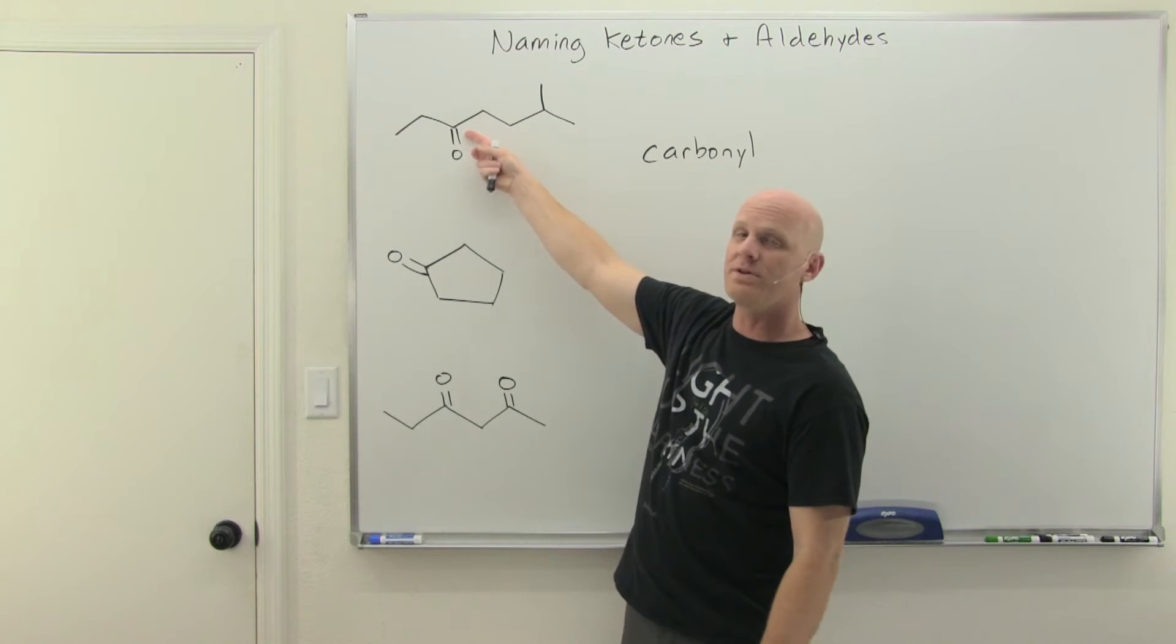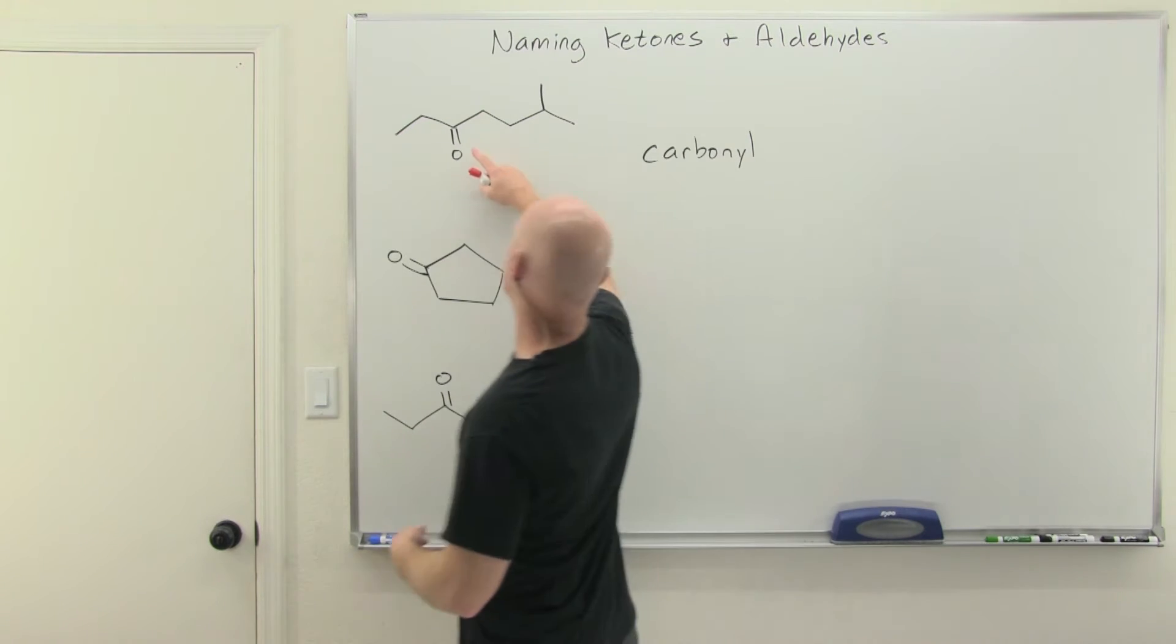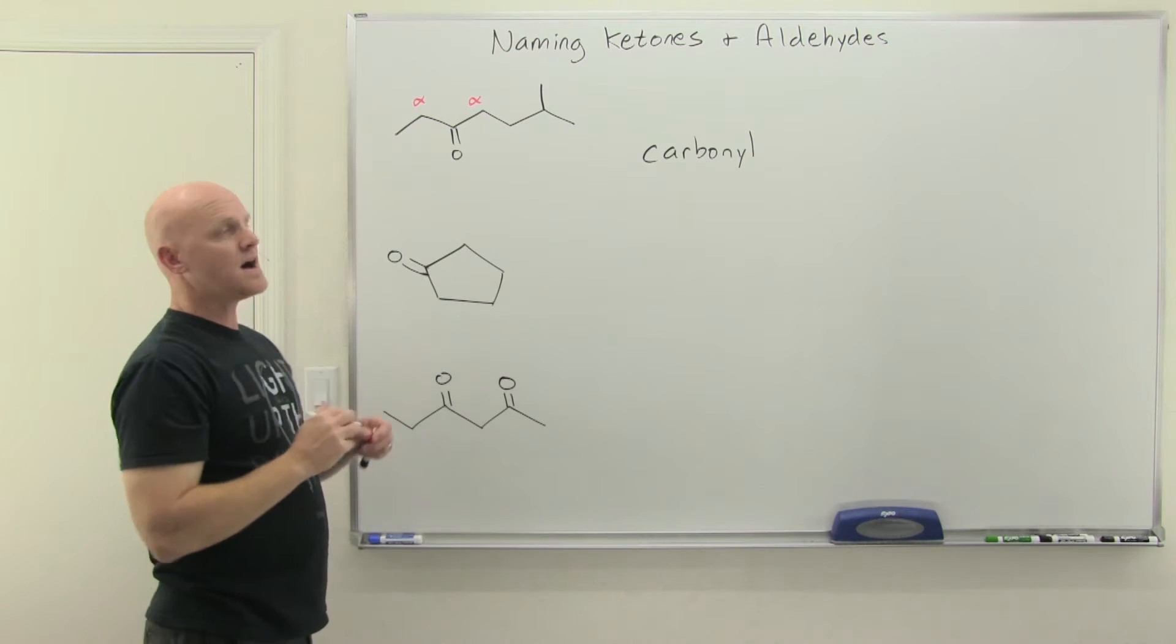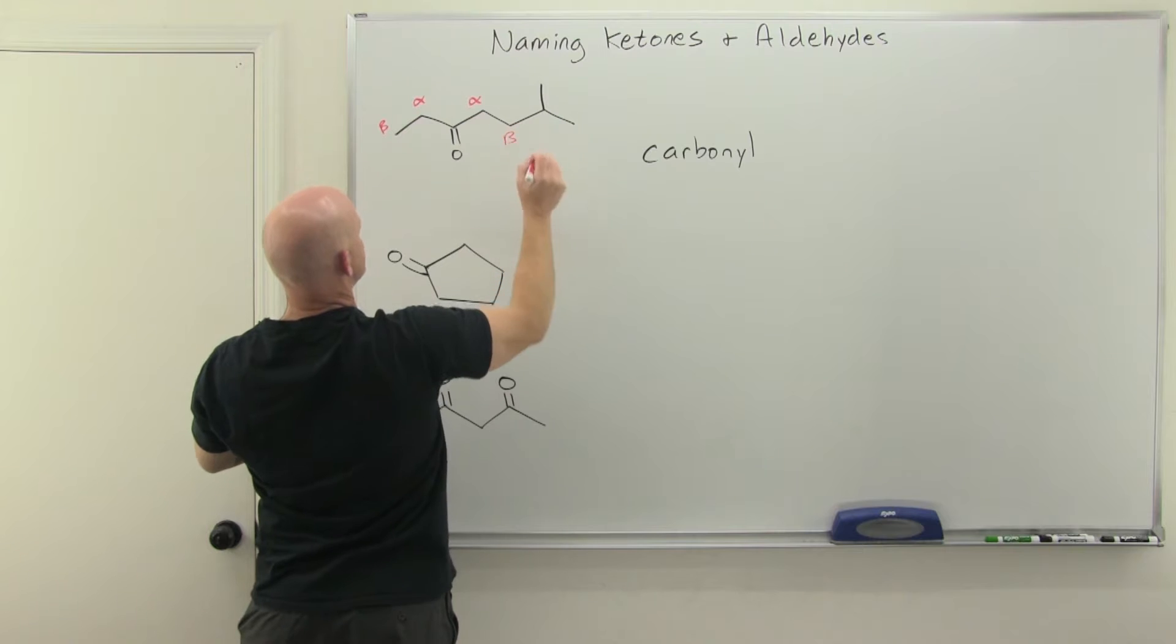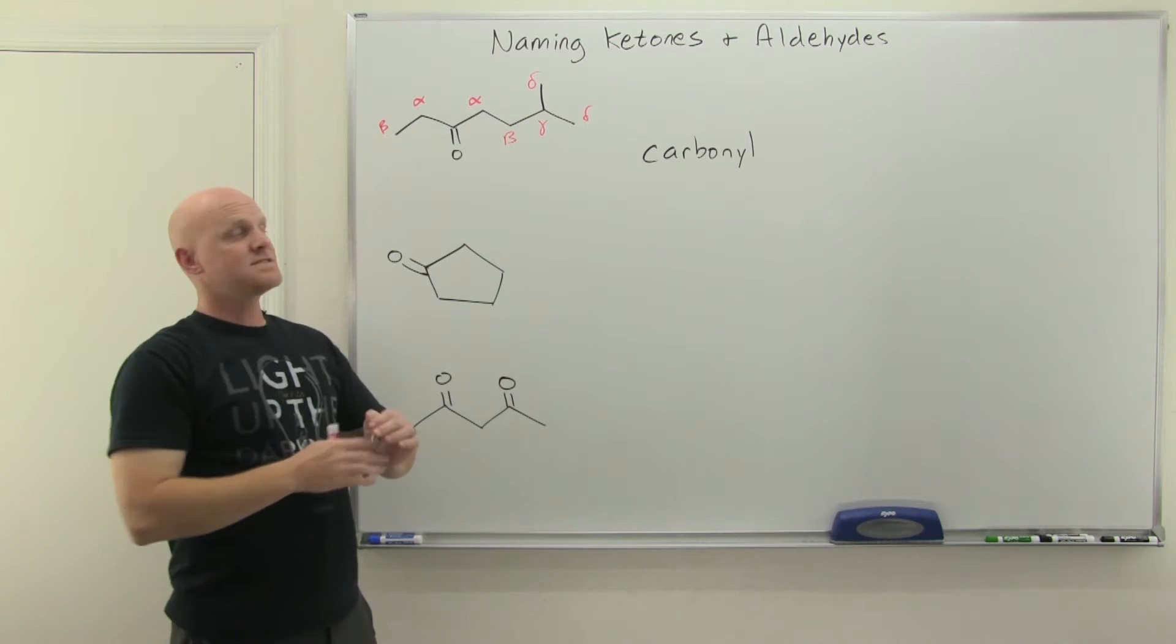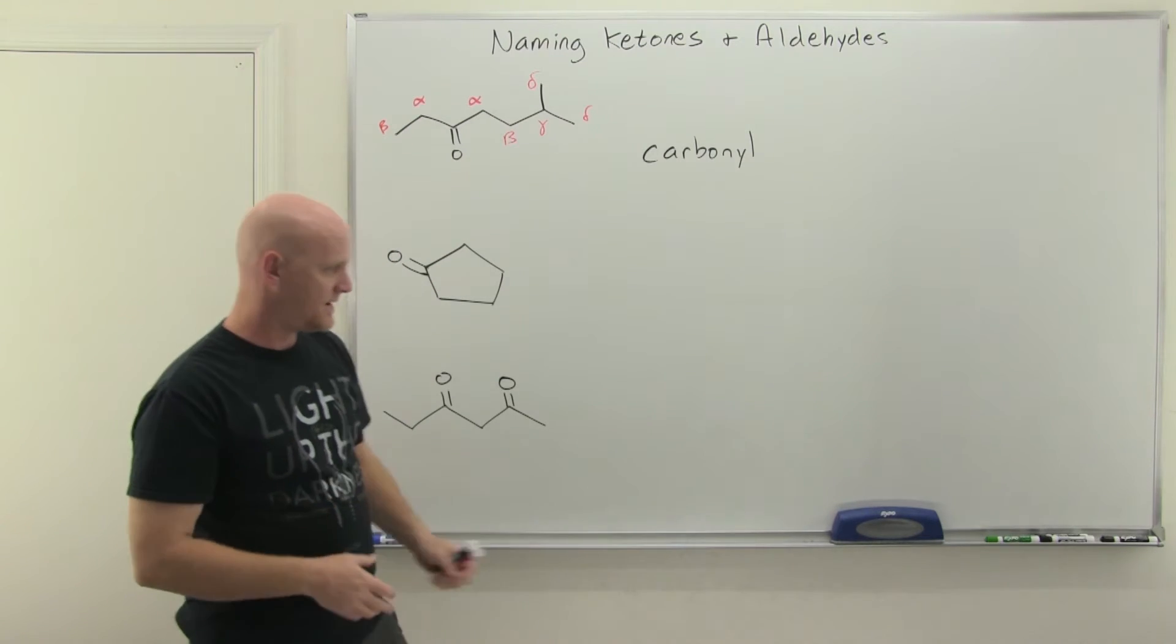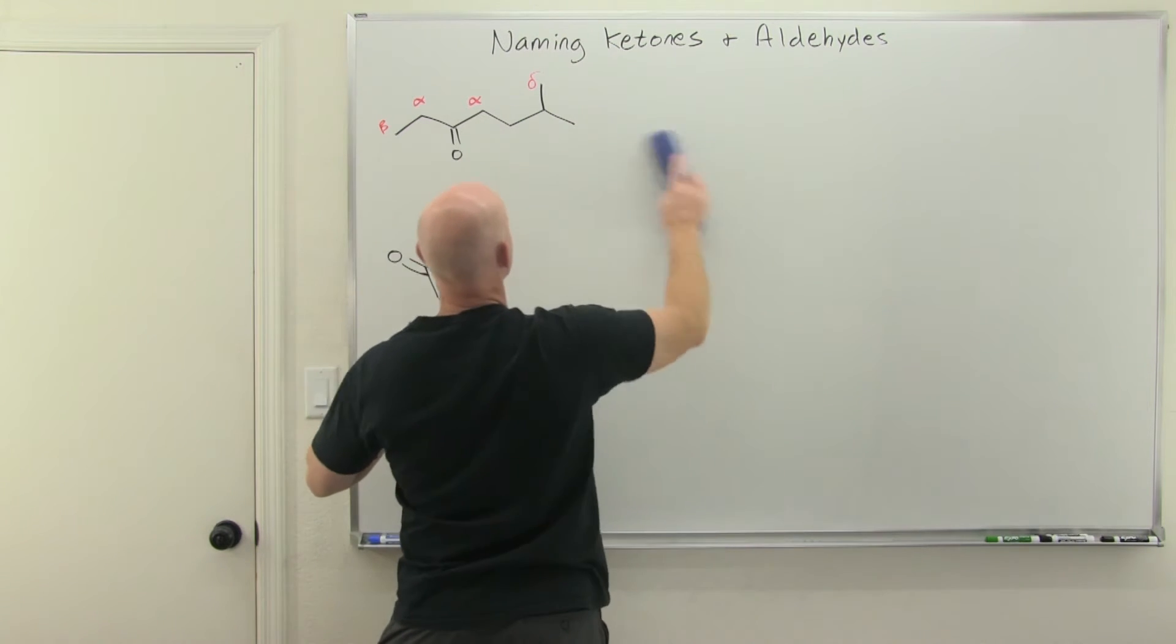One other thing is when you've got these carbonyl groups, we often have a new way of identifying carbons using Greek letters. Your carbonyl carbon is ground zero. But then as you get further and further away, you start giving letters of the Greek alphabet. So one carbon away from the carbonyl carbon is the alpha carbon, two carbons away in any direction is the beta carbon, three carbons away would be gamma, and then you get delta, and so on and so forth. This is not going to be of interest to us just yet with nomenclature, I just want to make sure this is clear from the get-go.